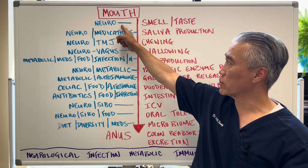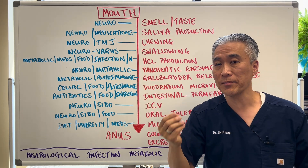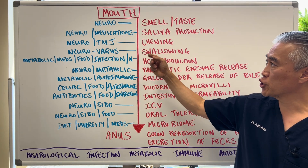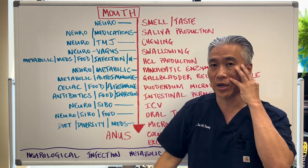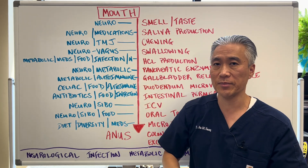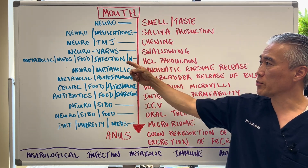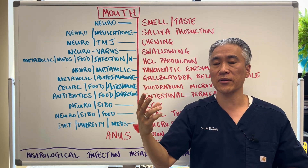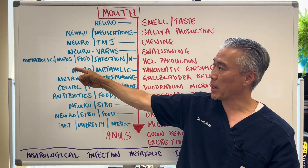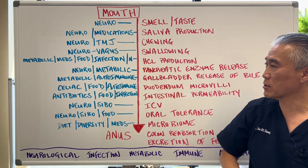Smell and taste is neurological. Saliva production can be neurological, or sometimes medication will prevent saliva production. Chewing can be neurological because the muscles of mastication can be affected, as can TMJ or temporomandibular joint dysfunction. Swallowing can be neurological, especially with the vagus nerve. HCL production can be metabolic, related to medications, food, infection, or even neurologic.